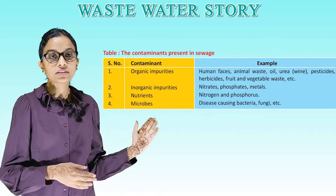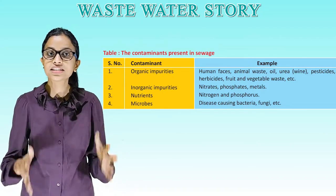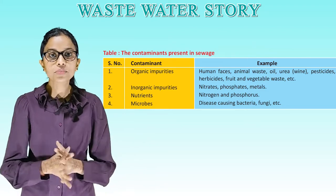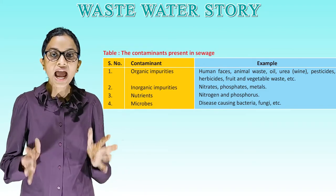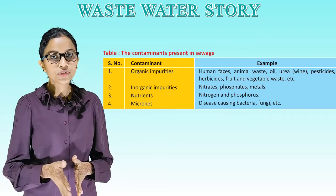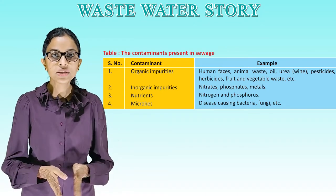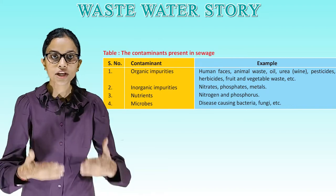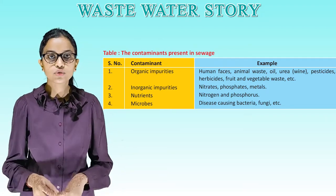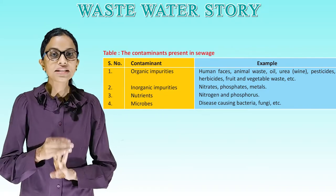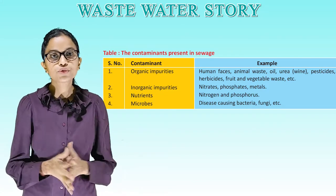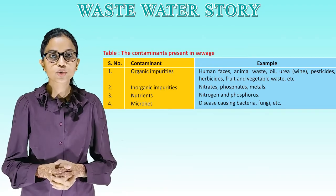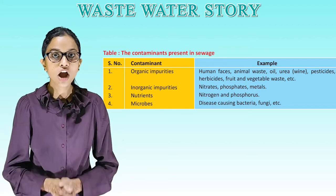The following table shows the contaminants present in sewage: (1) Organic impurities — human feces, animal waste, oil, urea, wine, pesticides, herbicides, fruits and vegetable waste, etc. (2) Inorganic impurities — nitrates, phosphates, metals. (3) Nutrients — nitrogen and phosphorus. (4) Microbes — disease-causing bacteria, fungi, etc.